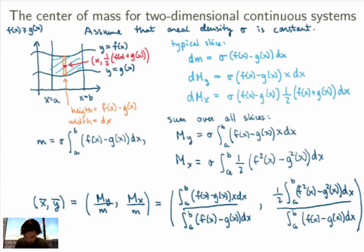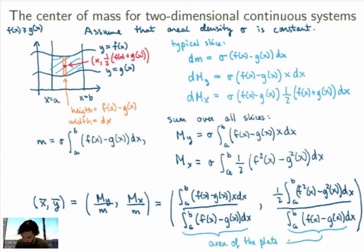Notice that the denominator in both formulas is just the area of the plate. This is the general formula for the center of mass of a two-dimensional plate with constant areal density, and we'll work through some concrete examples in class.